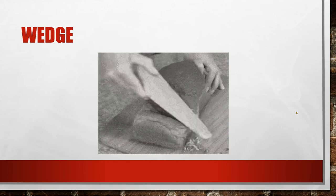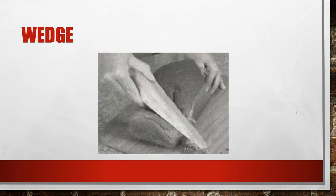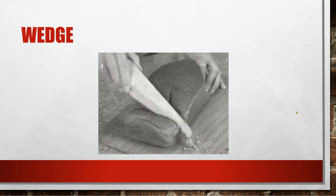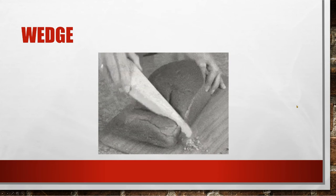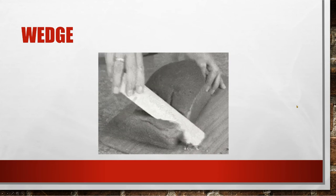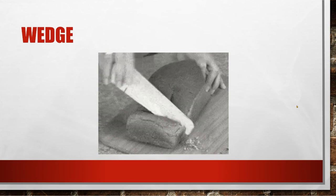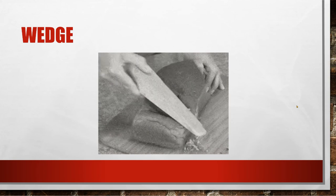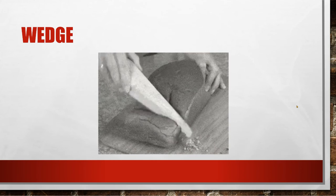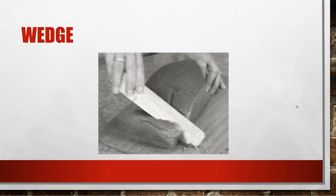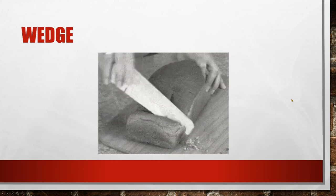A wedge. Believe it or not, a knife is a wedge. A knife is a wedge with a serrated edge. How about that? You can cut a piece of bread easily with a serrated knife, a wedge, but not with a wedge like this. This is ridiculous.